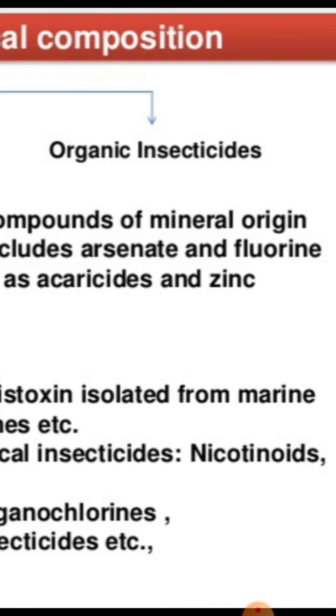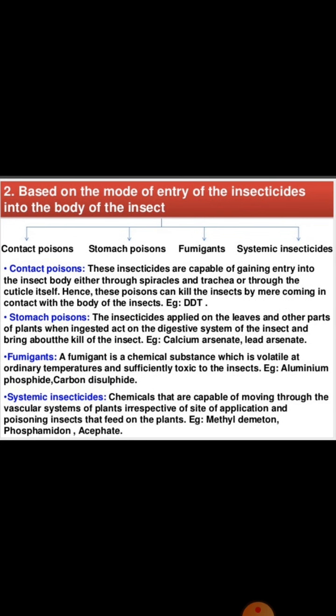Next is classification based on mode of entry of insecticide into the body of the insect: contact poison, stomach poison, fumigants, and systemic insecticides. Contact poisons are insecticides capable of gaining entry into the insect body either through spiracles or trachea — spiracles are pores outside the body through which the poison enters, or through the trachea (windpipe). The poison kills the insect by mere contact with the body; example is DDT.